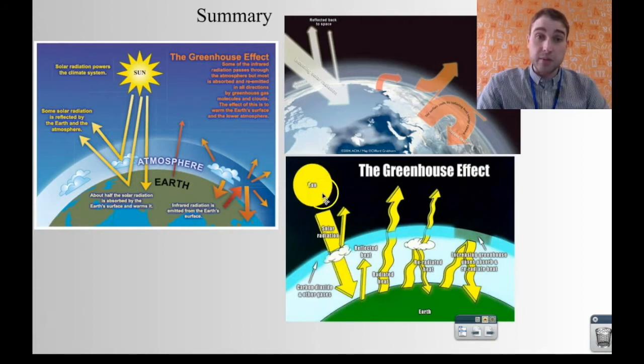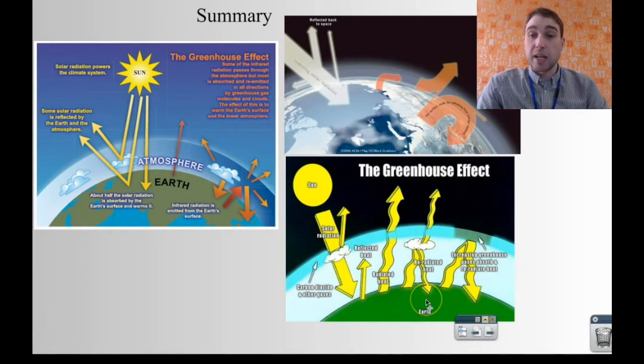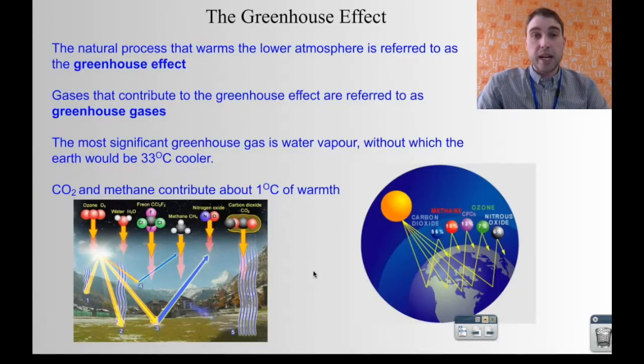So here's another picture showing the same things. Here we have the sun, we have the solar radiation coming down, it gets absorbed by the surface, it gets radiated back out into the atmosphere. Some of it makes its way into space, some gets re-radiated back down and that's pretty much the story. So we call that the greenhouse effect.